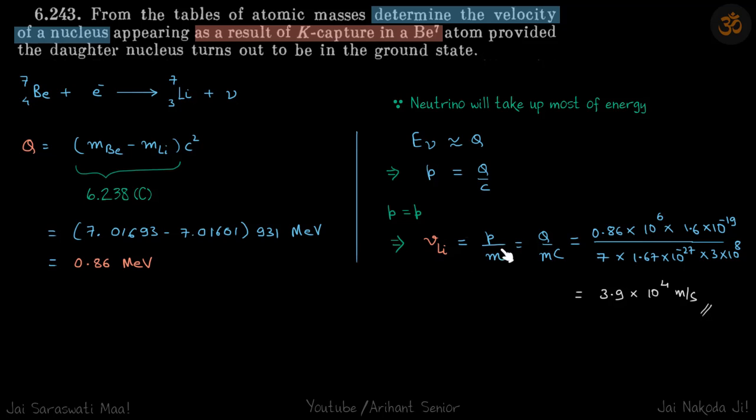So velocity of daughter nuclei is p by m, and p is Q by c, so this becomes Q by mc. So we'll put the value of Q here and mass of daughter nuclei times speed of light, so all that, and we'll get our answer. So this is the velocity of the daughter nuclei.